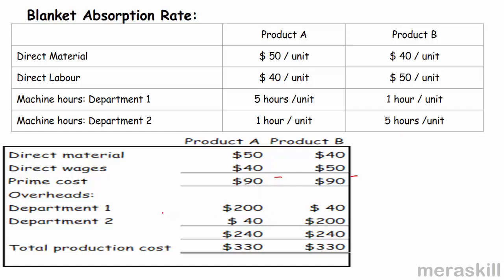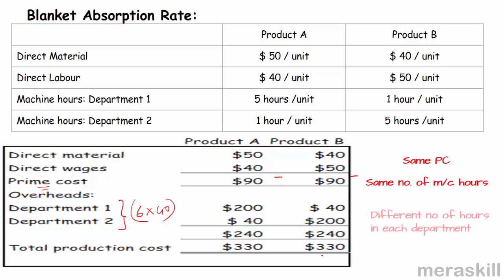Since we don't have a departmental rate, I didn't need to split by department — 6 hours at $40 is $240 in both cases. The prime cost is $90 and overheads are $240, giving a total production cost of $330 for both products A and B. They had the same prime cost and the same total machine hours, though product A took 5 hours in department 1 while product B took 5 hours in department 2. But using a single blanket rate, both end up with a total production cost of $330.